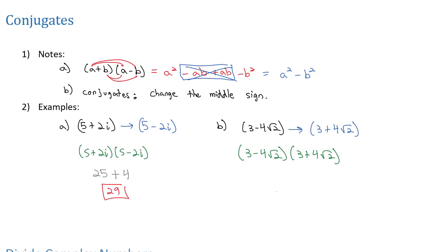it's going to give me the square of both terms with a minus in between. 3 squared is 9, minus 4 squared is 16 times square root of 2 squared, which just leaves the 2 behind. 9 minus 32 after multiplying is negative 23.